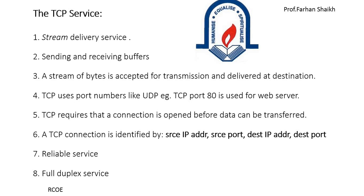TCP uses port numbers like UDP — for example, TCP port 80 is used for web servers. TCP requires that a connection is open before data can be transmitted, since it is connection-oriented. A TCP connection is identified by source IP address, source port, destination port number, and destination IP address.